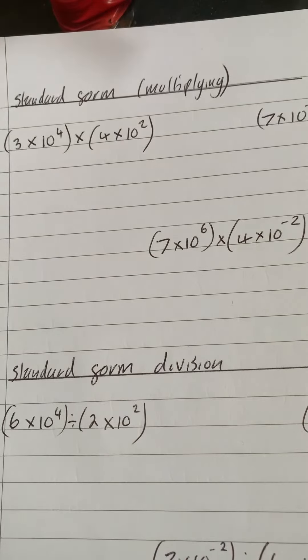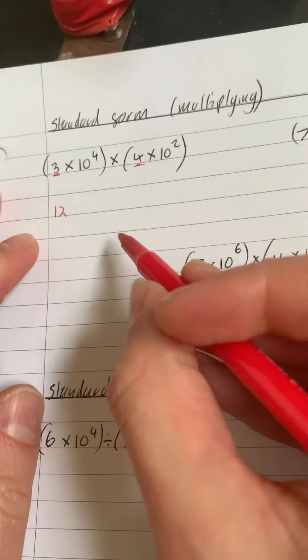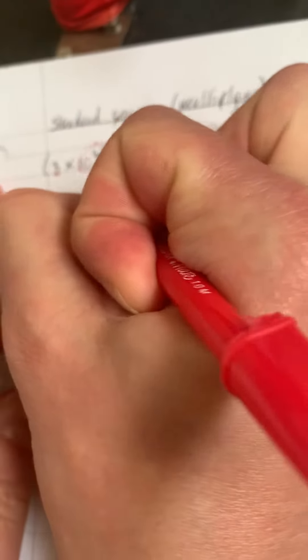Okay, multiplying standard form. Normally this is in the non-calculator paper, so what you have to do is 3 times 4, which is 12, and with powers, when we've got 10 to the power of 4 times 10 to the power of 2, we add the powers, so we've got 10 to the power of 6.